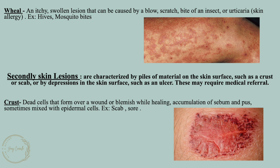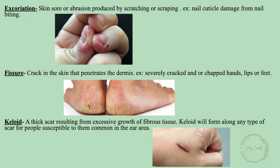Secondary lesions may require medical referral. A crust consists of dead skin cells that form over a wound or blemish while healing — an accumulation of sebum and pus, sometimes mixed with epidermal cells; example: a scab. Excoriation is a skin sore or abrasion produced by scratching or scraping; example: nail or cuticle damage from nail biting. A fissure is a crack in the skin that penetrates the dermis; example: severely cracked or chapped hands, lips, or feet.